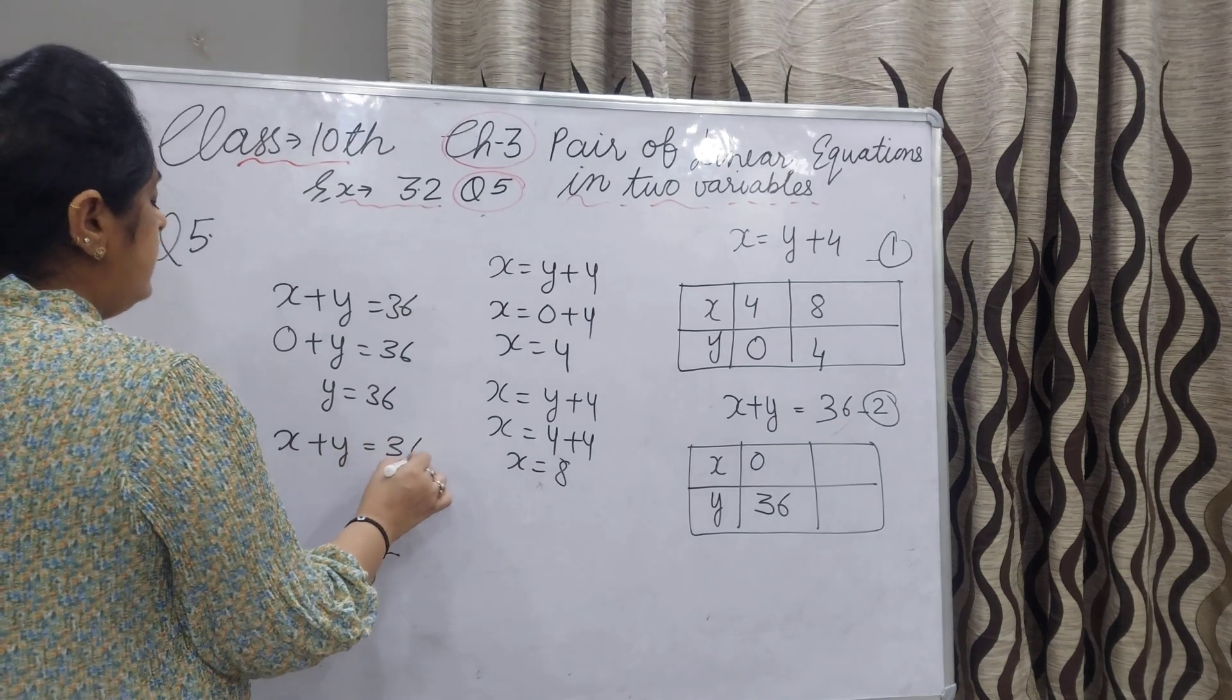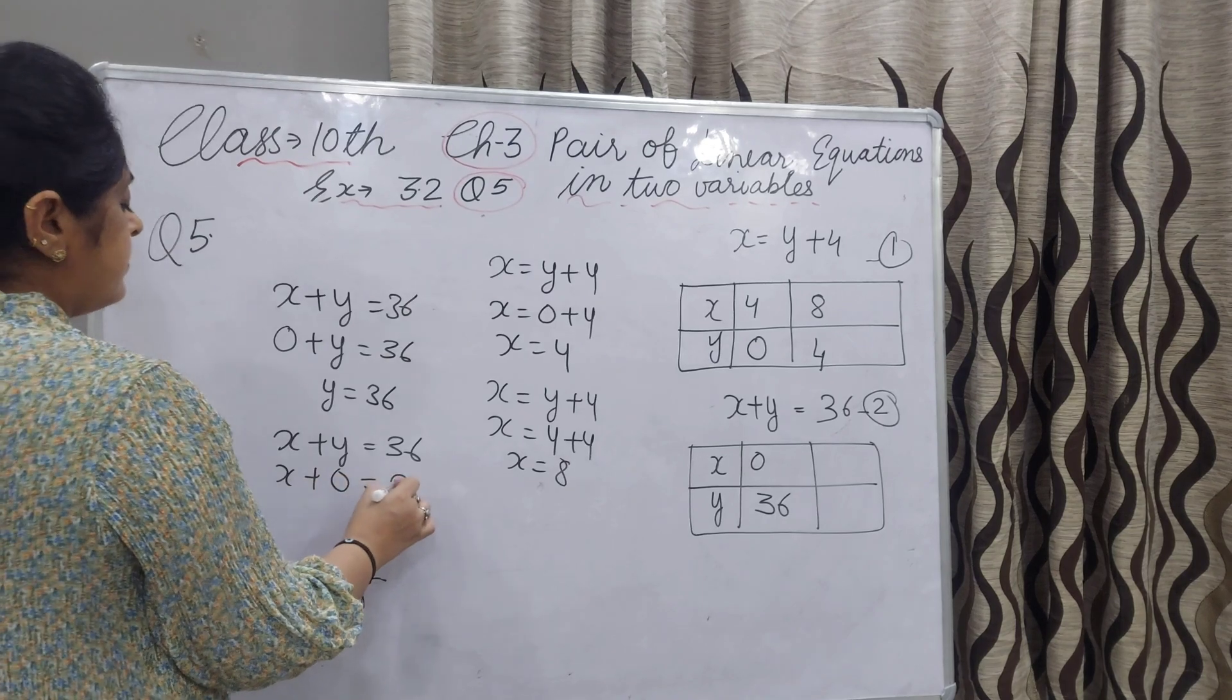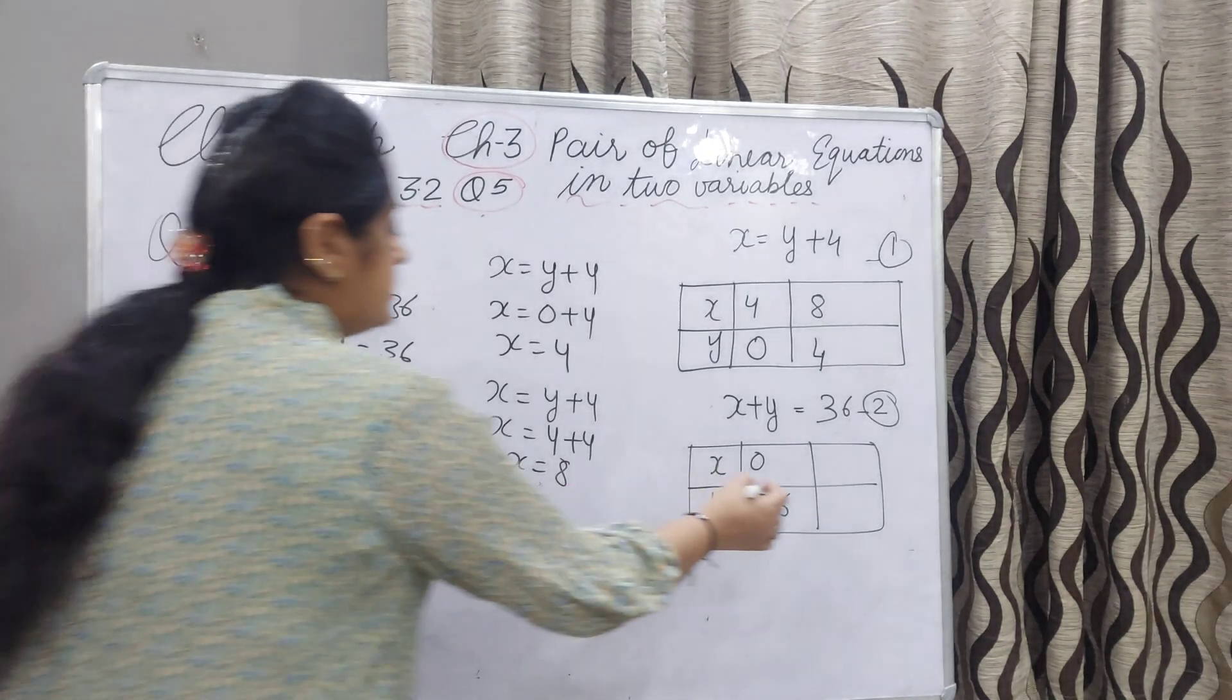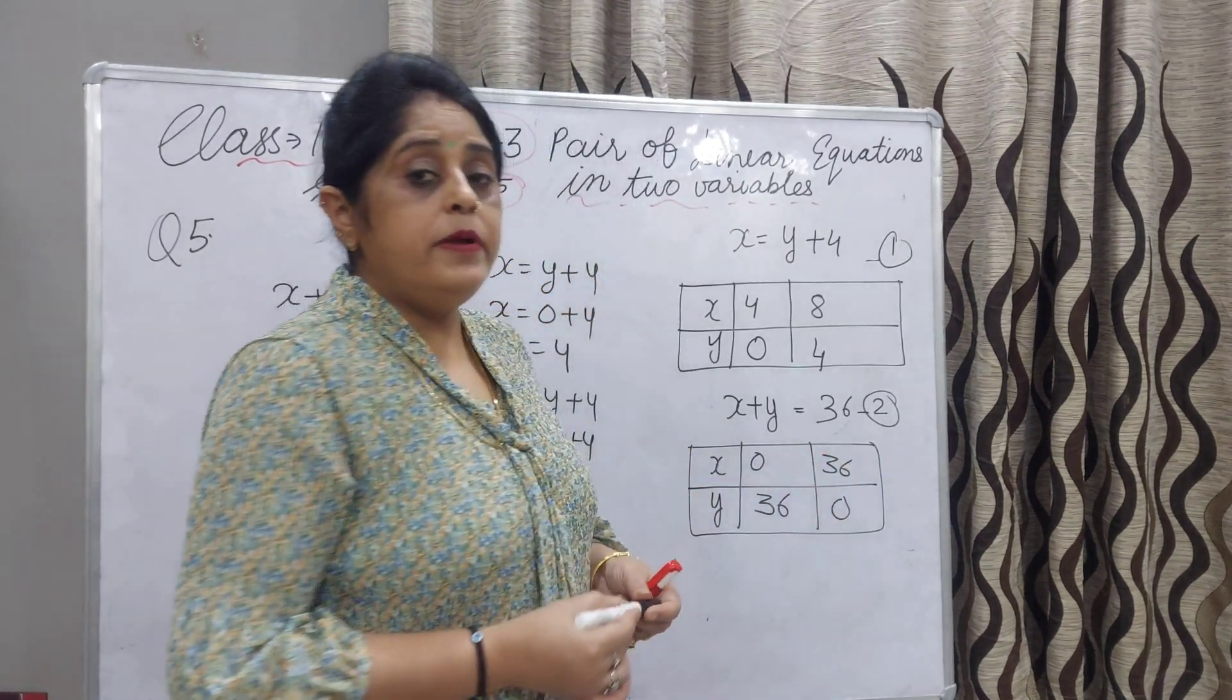Now you can take y as 0, x value will be 36. This is 0 and this is 36. We have made 2 tables.